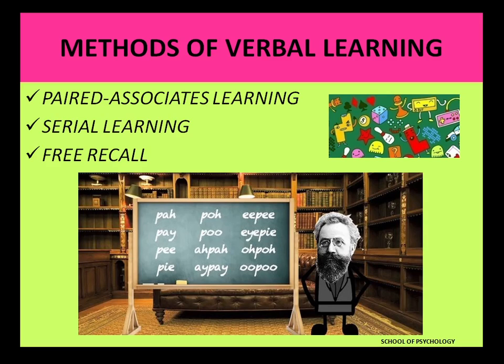So this was all about the methods of verbal learning, where we started with paired associates learning, then talked about serial learning, and finally free recall. These are the three important methods of verbal learning. Thank you so much, children.